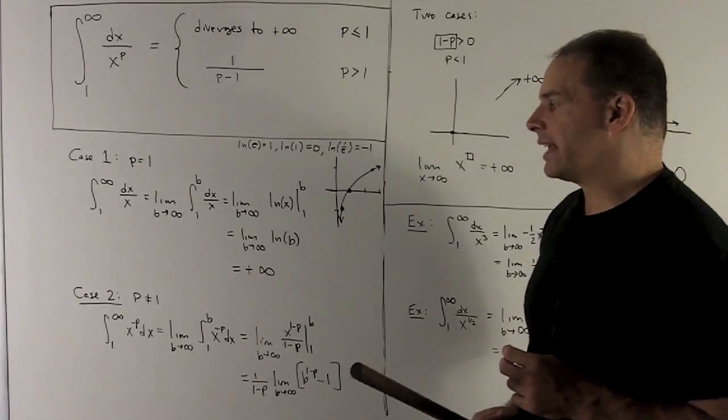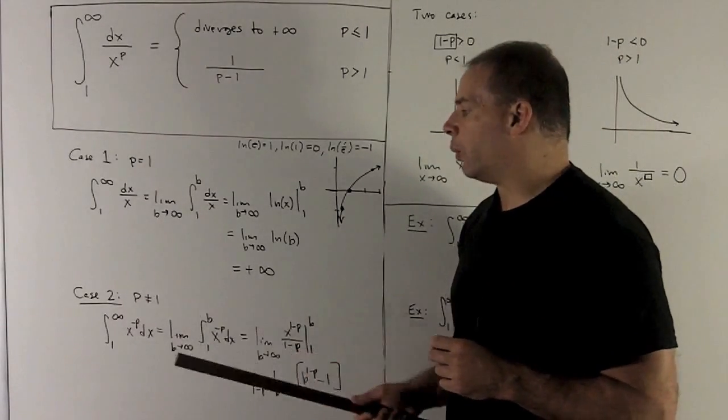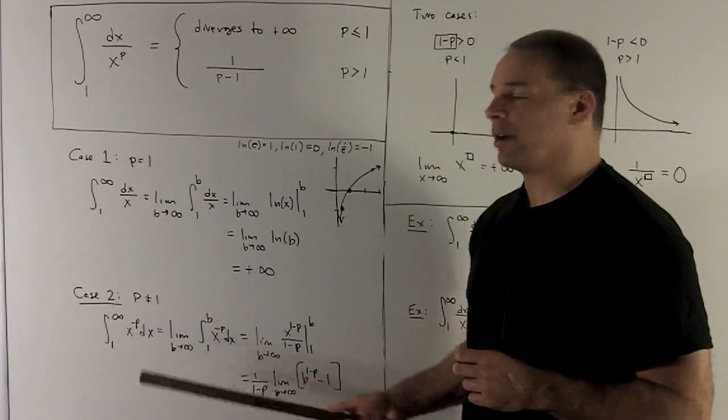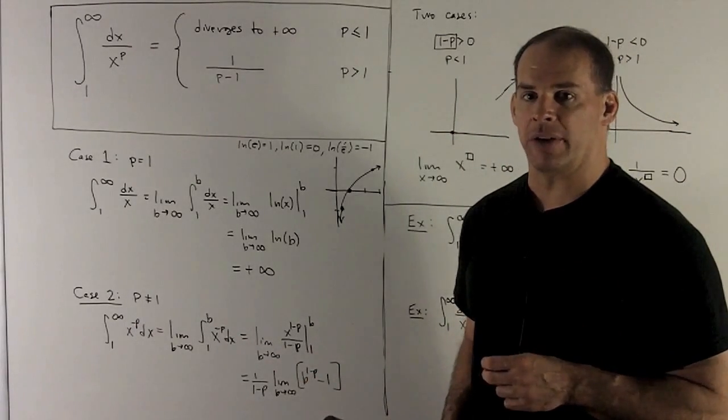Let's consider the second case, p is not equal to 1. So here, add 1, flip it over. Perfectly good procedure for antiderivatives in this case.